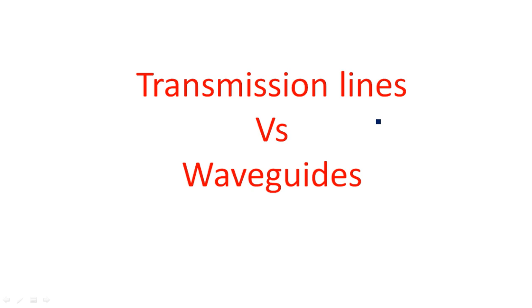In this video, I am going to explain the differences between transmission lines and waveguides. In normal analog and digital communication, we have seen two-wire communication like transmission lines. But in waveguides, we do not use any wiring technique — we use completely different waveguide components such as directional couplers, isolators, circulators, and gyrators. These components are used in microwave communication, whereas wired communication was used in previous analog and digital systems.